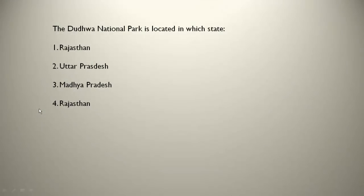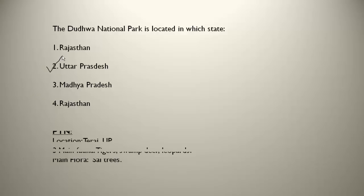The Dudhwa National Park is located in which state? It is located in Uttar Pradesh, in the Terai region. The three main fauna are tigers, swamp deer, and leopards. Tigers are present here too, making it important. The main flora is sal trees, which are found in abundance here.